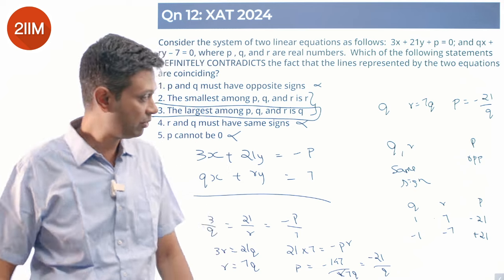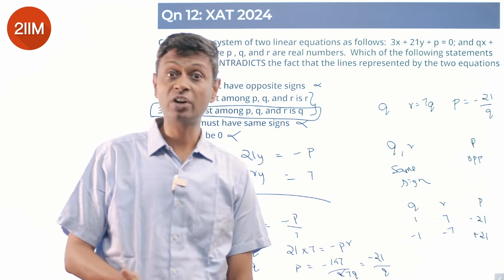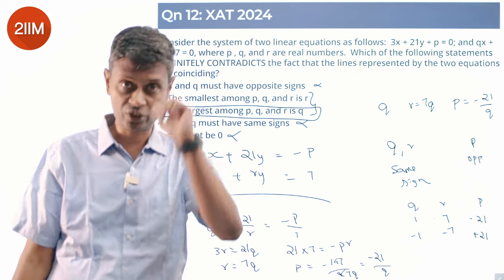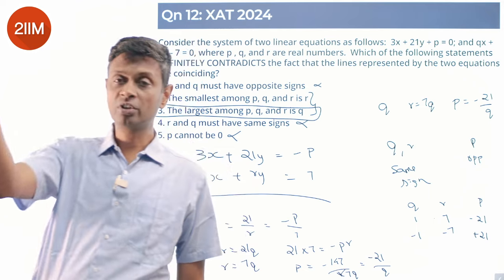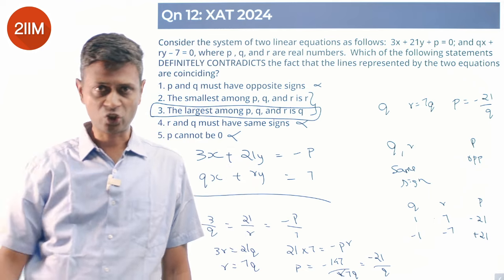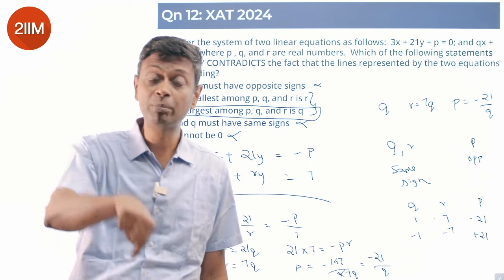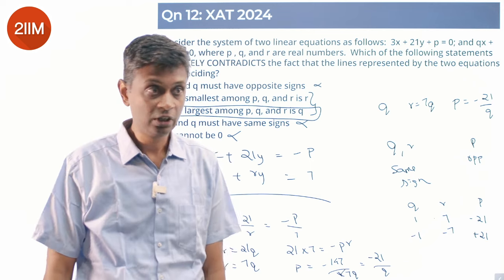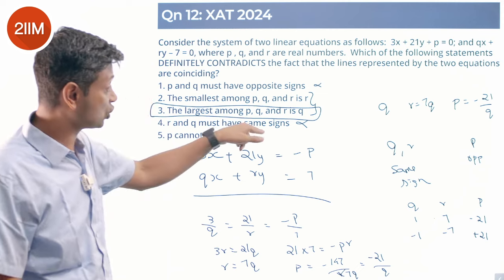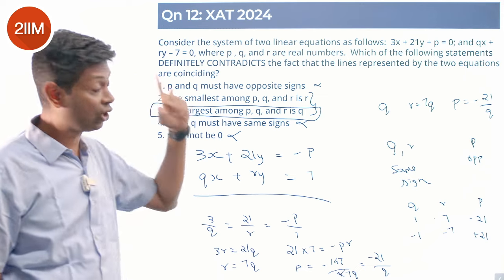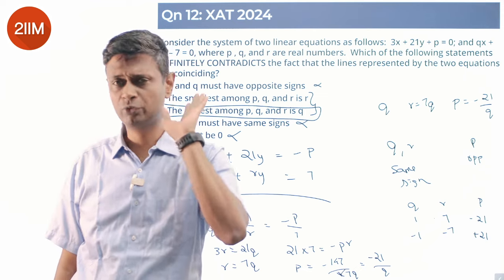So this particular statement for this situation can never be satisfied. If p were positive - if q were positive, r is 7 times q, r is larger. If q were negative, p is the opposite sign, p is positive, p is the largest. So for this set of conditions, q can never be the largest of the three. So if q were the largest of the three numbers, then this cannot be satisfied. So this definitely contradicts it.